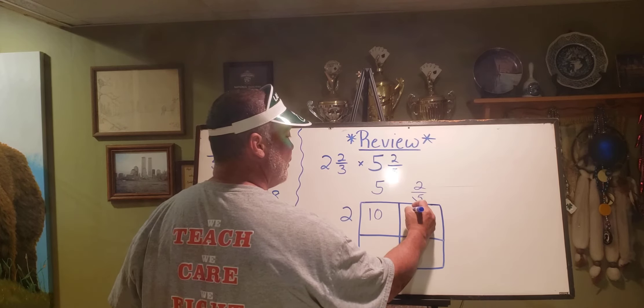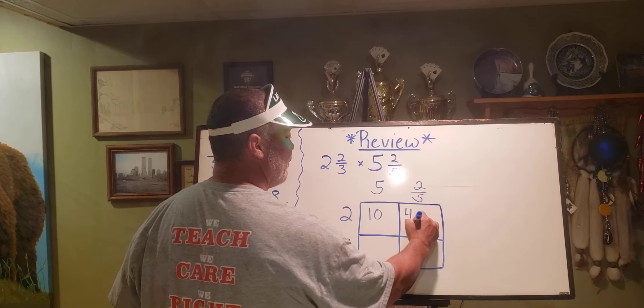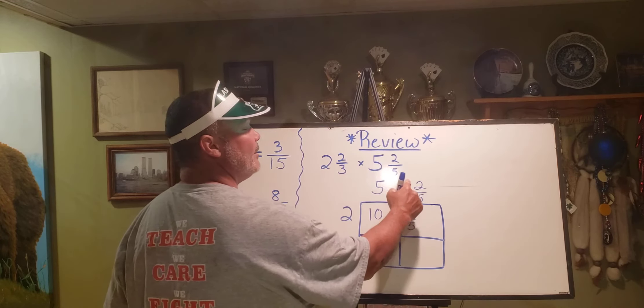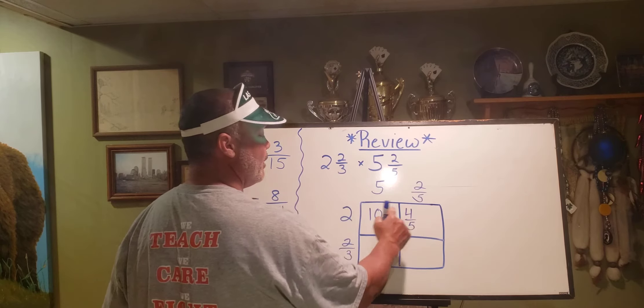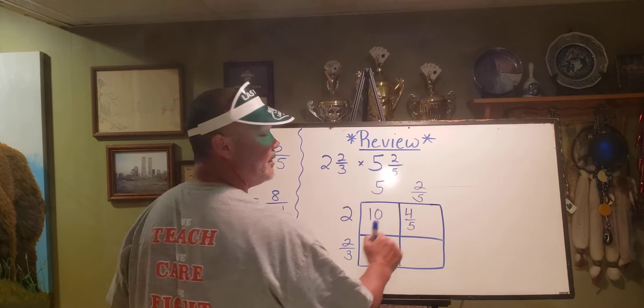Because two over one really means two times two, giving me the four, and then one times five gives me the five.